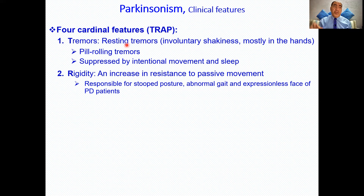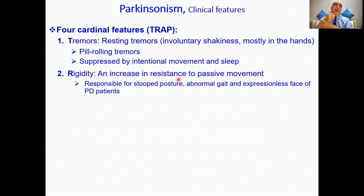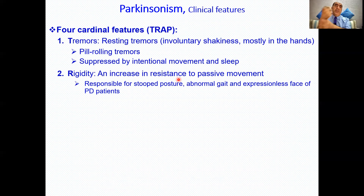The tremor is suppressed by intentional movement — if you carry something, shake hands with someone, or hold a surface, it will stop — and it also stops during sleep. The second clinical feature is rigidity: increased resistance to passive movement. Normally, when you move the arm of a person passively and ask them not to resist, it goes smoothly. In a Parkinson's disease patient, there will be intermittent resistance — a stop-and-go movement.